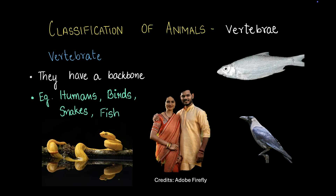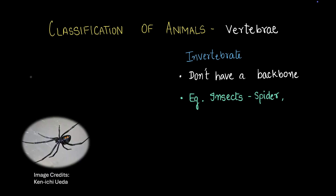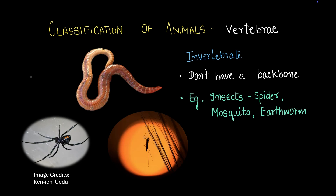Fish are also vertebrates — they have a set of bones and classify as vertebrates. Examples of invertebrates include insects, spiders, mosquitoes, and earthworms — none of these have a backbone.